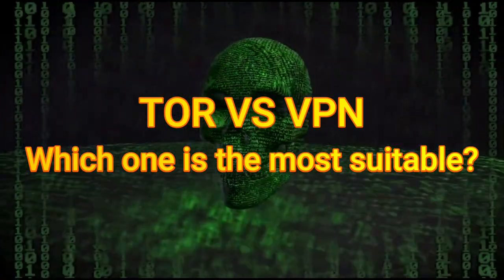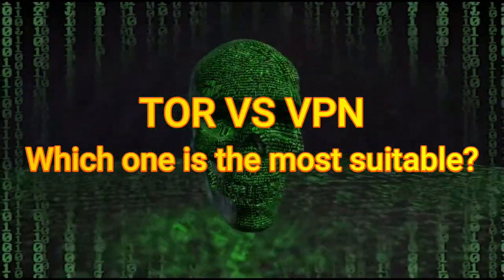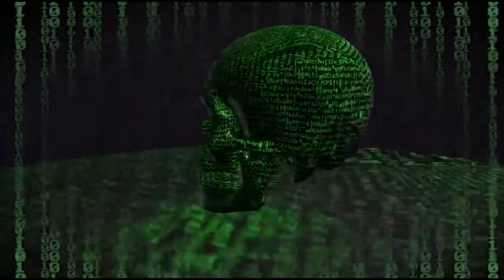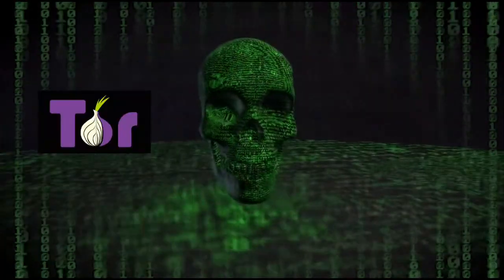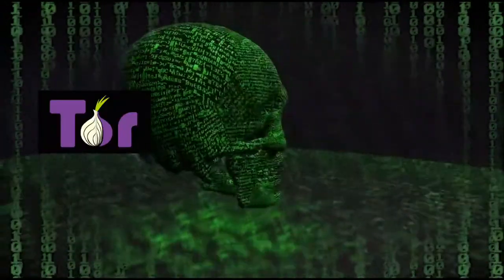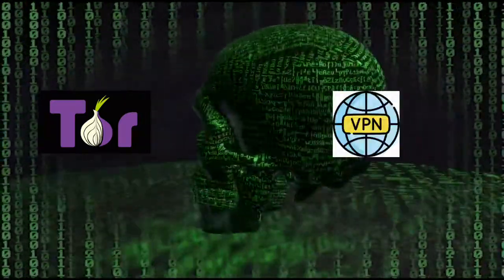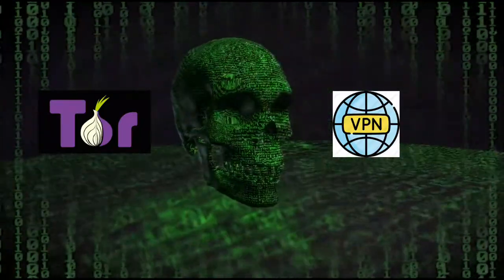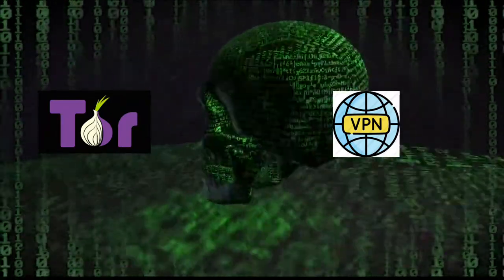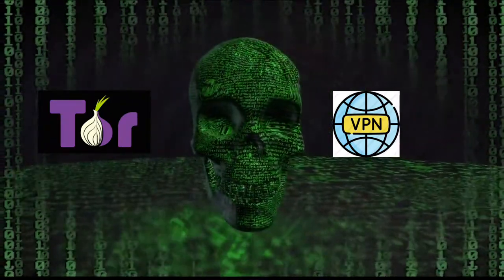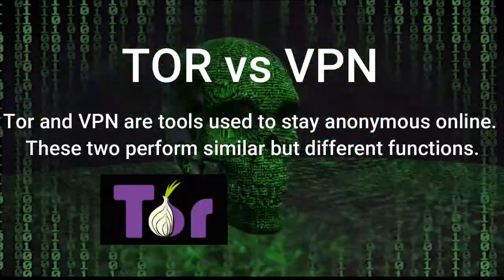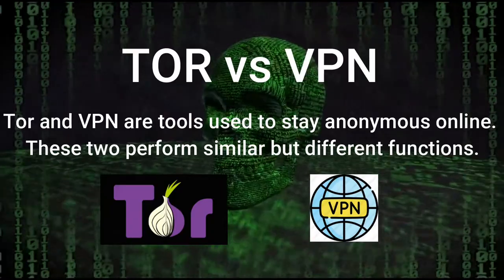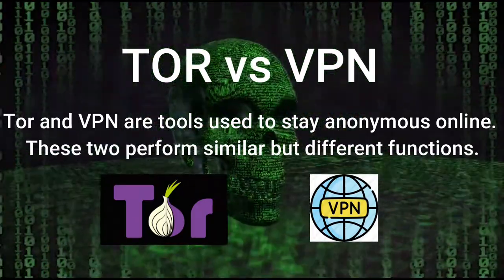Stay with me until the end — you're going to find out our final verdict on which one we think is best. To put it simply, Tor is best for transmitting sensitive information anonymously, and VPN is usually the more effective solution for everyday use, as it strikes a great balance between connection speed, convenience, and privacy. Technically, both Tor and VPN are tools used to stay private online, so they perform similarly but have different functions.